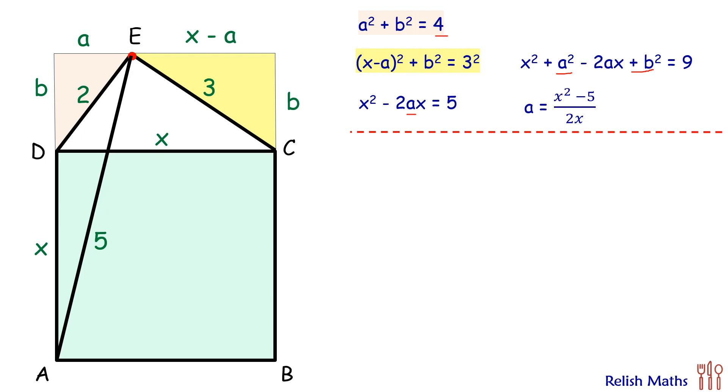Now we have three variables a, b, and x, so we need a third equation. For that, we are drawing right angle triangle AE. In this triangle, applying Pythagorean theorem again, (x + b)² + a² = 5².